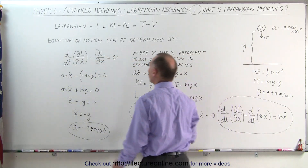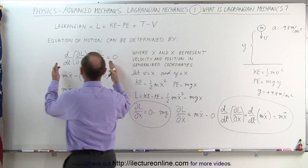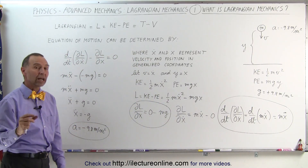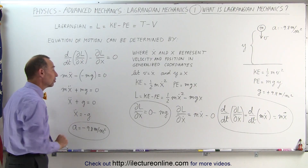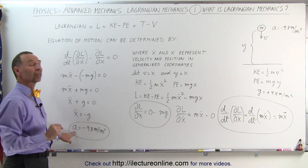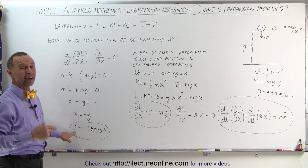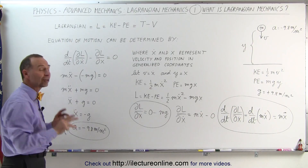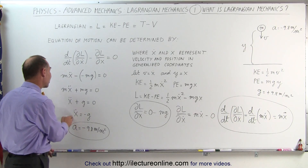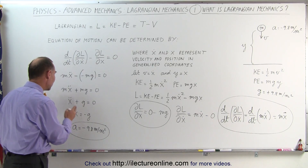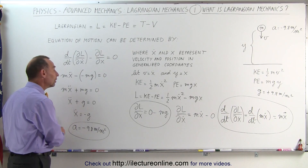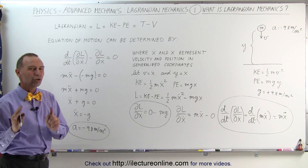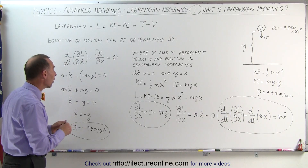This shows us that by using the Lagrangian, we can actually come up with the equation of motion and describe the acceleration of the object. If we take the integral of the acceleration we can find the velocity, and integrating again we can find the position as a function of time. We'll show you how to do that in a later video.